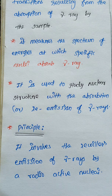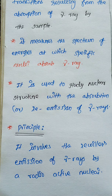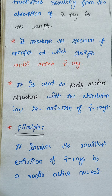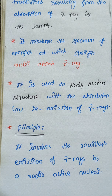Next, we are going to discuss the principle. Before starting the principle, Mössbauer spectroscopy works based on two effects: one is called the recoil effect or recoil energy, and the second one is called the Doppler shift. Mössbauer spectroscopy functions based on these two effects.